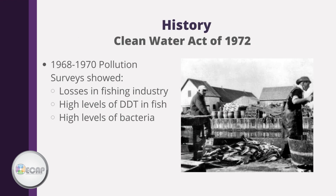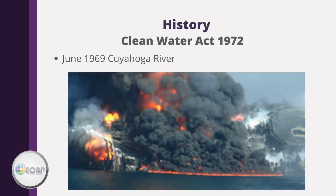Pollution surveys conducted from 1968 through 1970 showed losses in the fishing industry, high levels of DDT in fish, and high levels of bacteria. This period really brought attention to the need for environmental regulations. On June 22, 1969, the Cuyahoga River caught fire — one of the most well-known environmental disasters in U.S. history — spurring much of the environmental movement and regulations of the early 1970s.